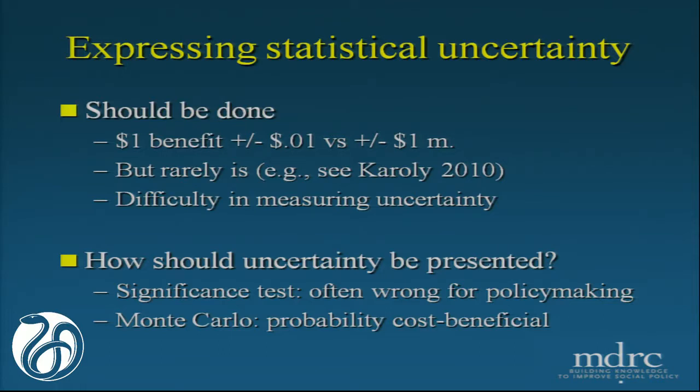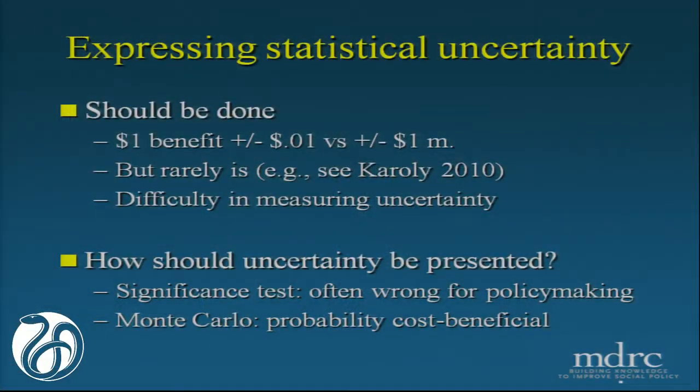If you have something that has a $1 net benefit and you know that has a standard error of one cent, that may lead to very different conclusions than if it has a standard error of $1 million. Knowing how certain you are about the result seems key, rather than just knowing what that number is. It's obviously one of the underlying principles of doing impact analyses, and it's interesting that it's not taken into account nearly as much here. It would be really interesting to see if there are standards around how to express statistical uncertainty and how to use those numbers.